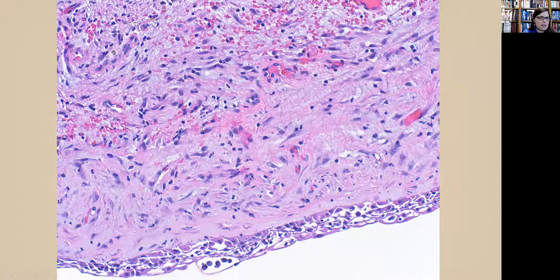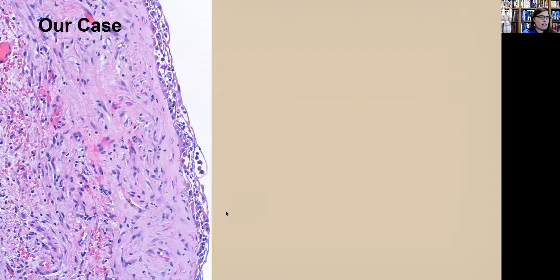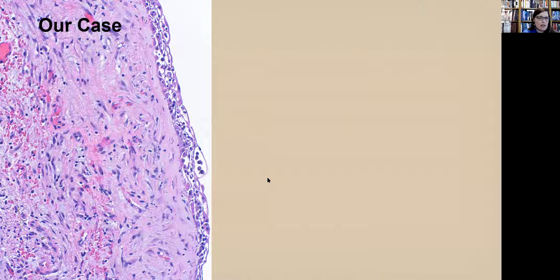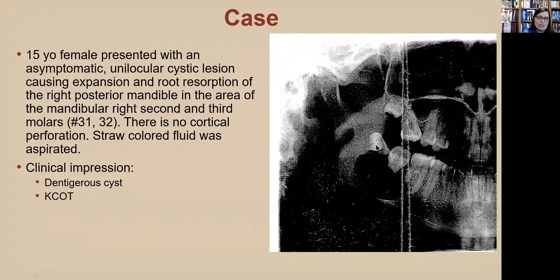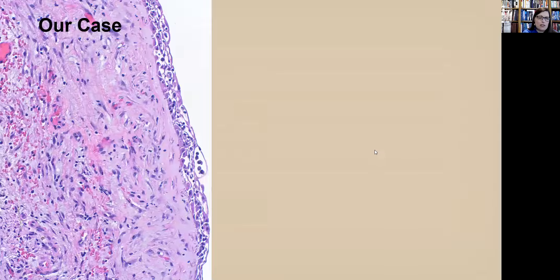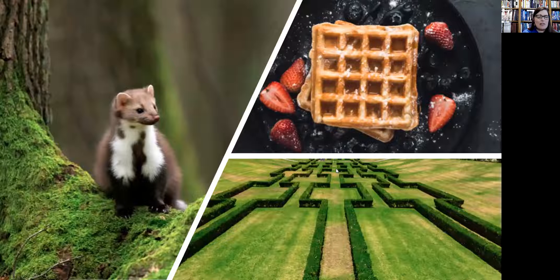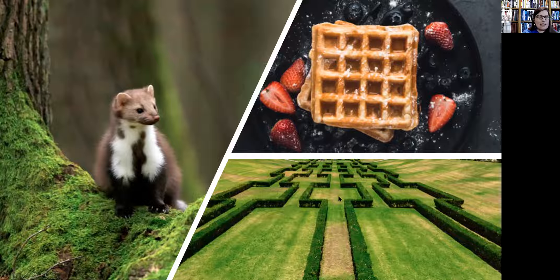Here's the biopsy — it's inflamed and somewhat squamoid. Compared to a dentigerous cyst, a dentigerous cyst connects at the level of the cemento-enamel junction, and this cyst isn't really connecting at that level. As pathologists, there are times when we need to hedge. This is a 15-year-old with a tiny incisional biopsy and a poor radiograph. The image doesn't fit a perfect dentigerous cyst, and the lesion is resorbing roots — which is unusual and suggests a more aggressive process. We don't have the whole lesion in front of us.